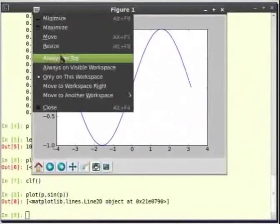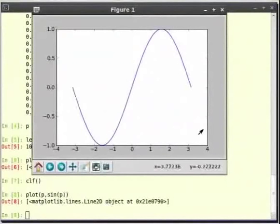We can study the plot better on the plot window by using the various options available on it. Let us have a look at these options. As we can observe, moving the mouse pointer along the plot gives us the location of each point on the plot.